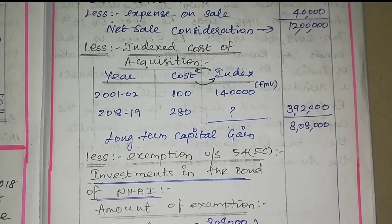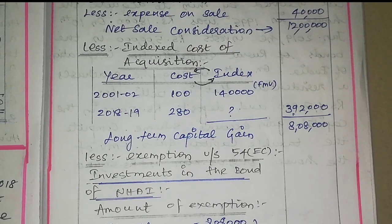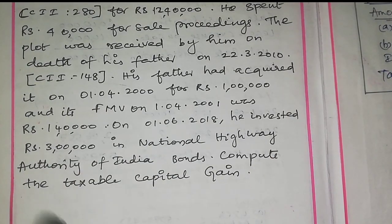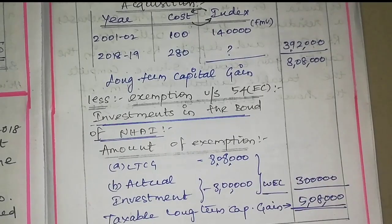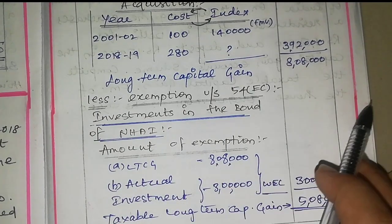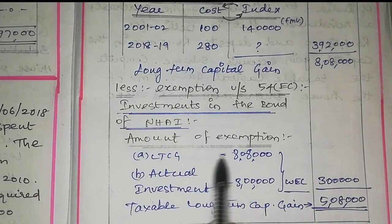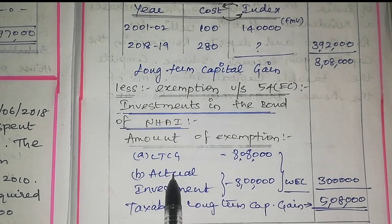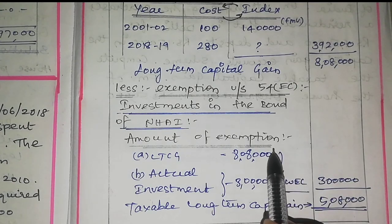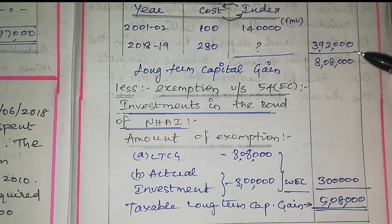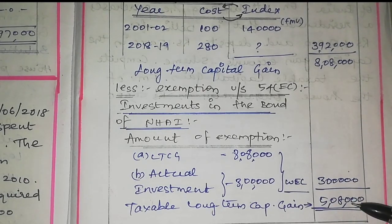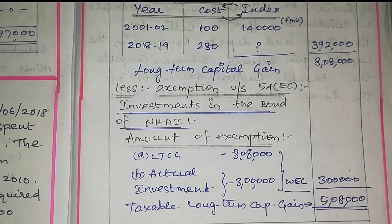Once we find out the long term capital gain, we look at the investments made. He invested Rs. 3,00,000 in National Highway Authority of India bonds. The amount of exemption is the lower of LTCG of Rs. 8,08,000 or actual amount invested Rs. 3,00,000 — whichever is least is Rs. 3,00,000. So Rs. 8,08,000 minus Rs. 3,00,000 gives remaining taxable long term capital gain of Rs. 5,08,000.